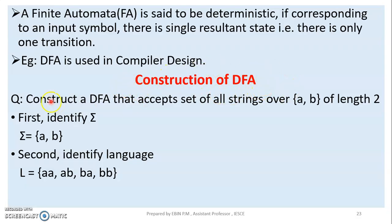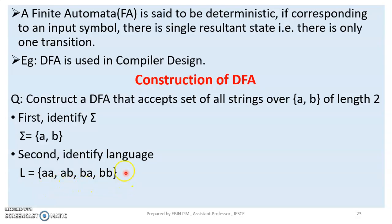In compiler design, the construction of a DFA is very common. For example, construct a DFA that accepts the set of all strings over {a, b} of length two. We first identify sigma — the alphabet — which is {a, b}. Then we identify the language: strings of length exactly two, such as aa, ab, ba, bb. This is how we create the language.